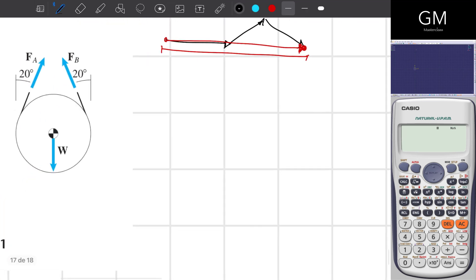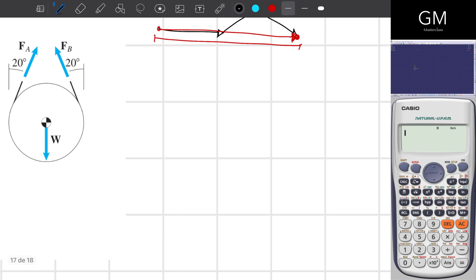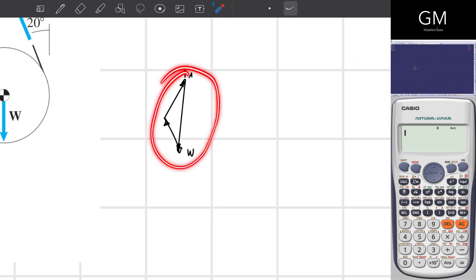for example, I have F_A, right here I have W, and right here I have F_B. The sum of these three is equal to zero because, as you can see right here, I do not have space for me to create a resultant vector. These three vectors are connected with each other.